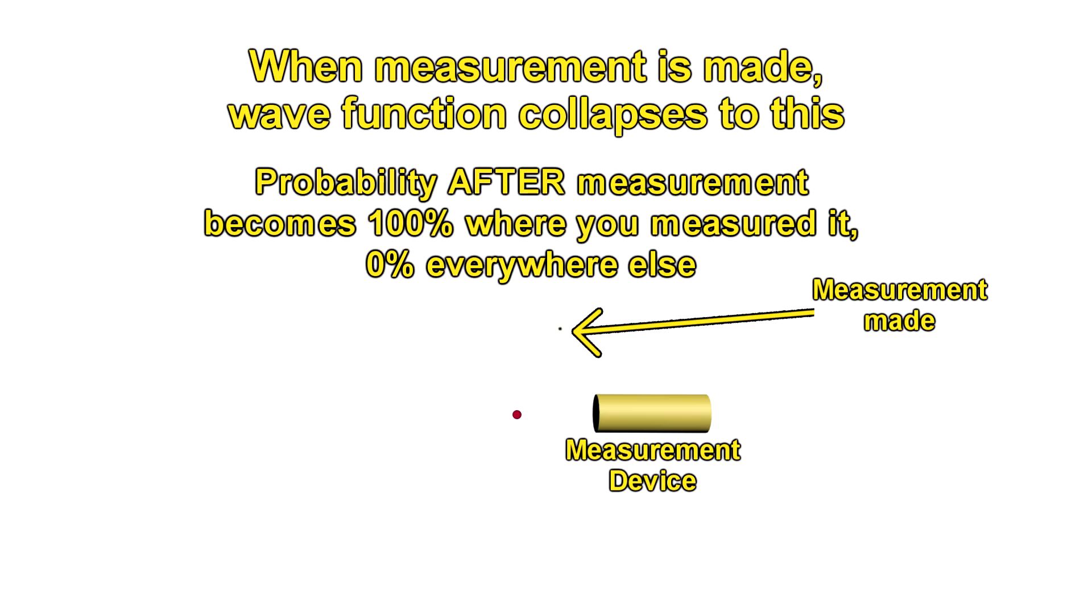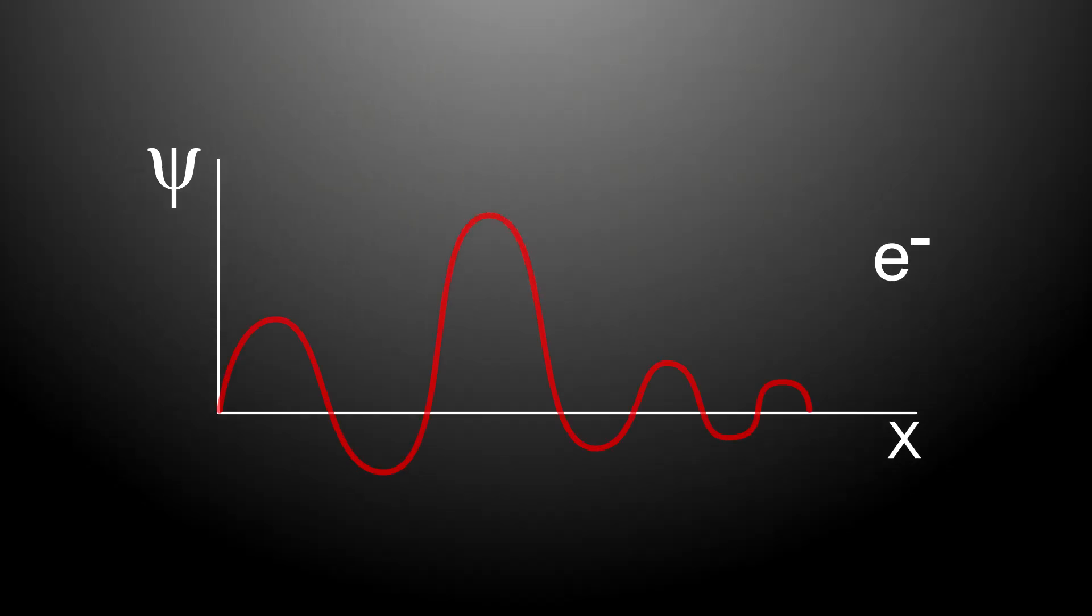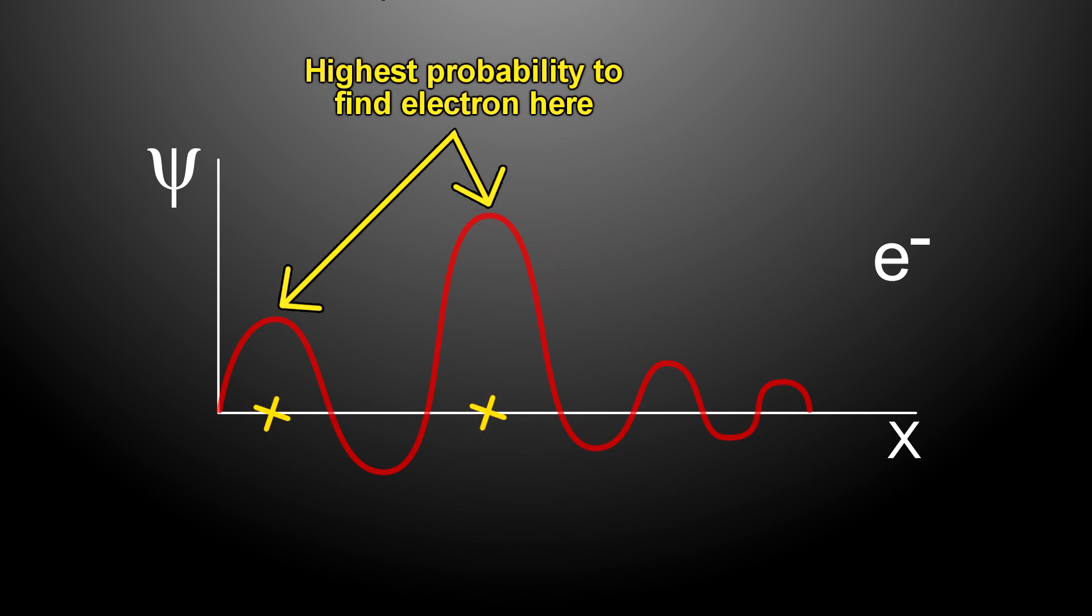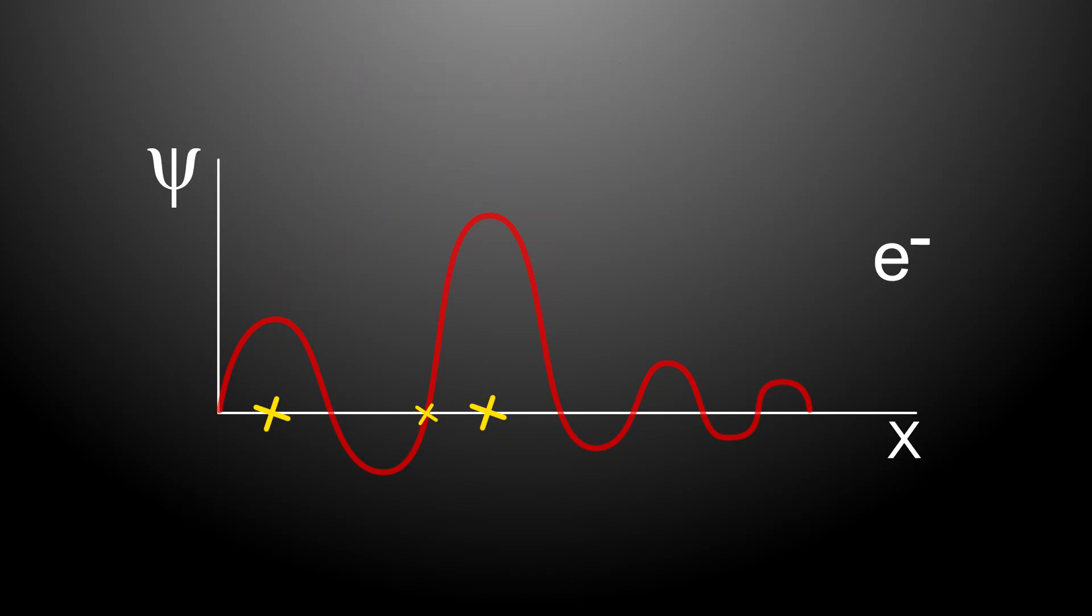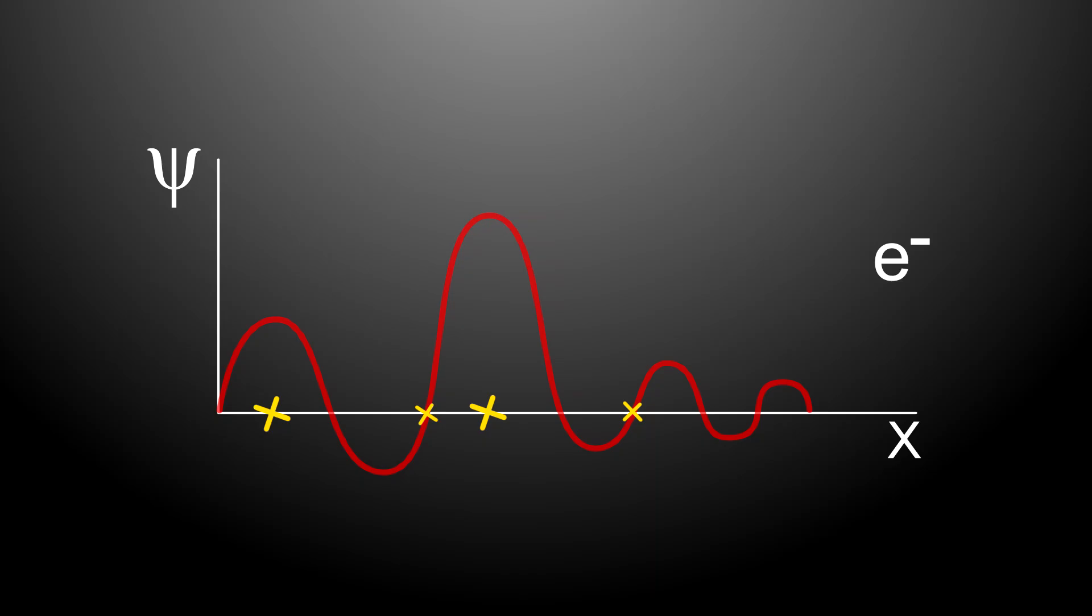When it's measured, its probability becomes 100% where you measured it, and 0% everywhere else. So for example, if the wave function for a particular system looks like this, the probability of finding the electron at this location, and this location, would be the highest. And here and here, would be the lowest. But you won't really know where to find it until it's measured. And you are unlikely to find the electron in the same spot if you repeat the test.